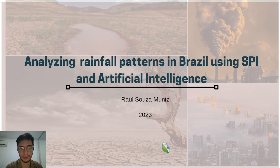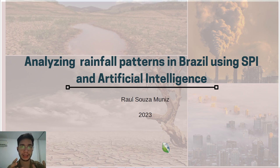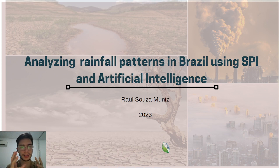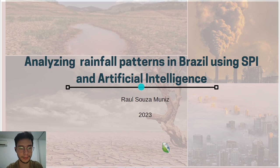If you want to know a little bit more about me and my work, you can access my website. It is still being created, but I will leave the address in the description down below. Today I am going to show you a little bit about the SPI, the Standardized Precipitation Index, and some use of artificial intelligence in the hydrology field. I hope you enjoy.